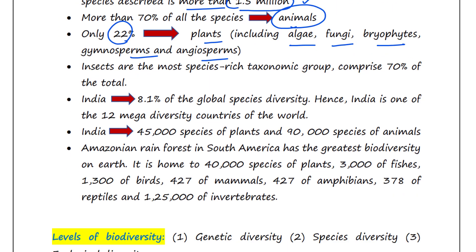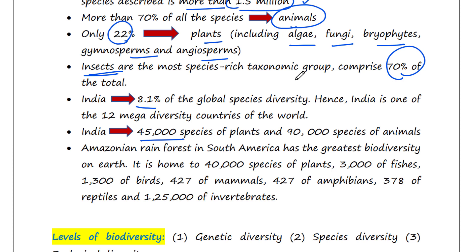Among animals, insects are the most species-rich taxonomic group and comprise 70 percent of the total. India shows 8.1 percent of the global species diversity, hence India is one of the 12 mega diversity countries of the world. Nearly 45,000 species of plants and 90,000 species of animals have been recorded from India.